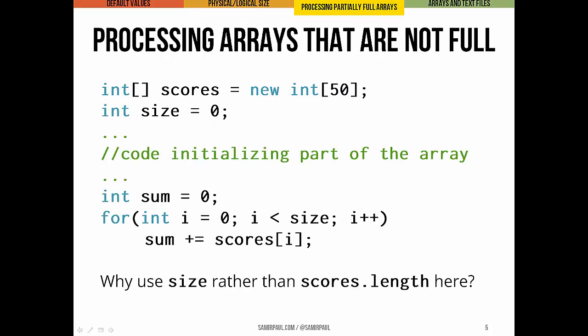Now, we saw in a prior lecture how we would generalize a loop so that we could process every element of data in an array of any size. Essentially we just access every index starting from zero and going to the length minus 1. But when the array's not full, instead of using the array's physical size, its length, we want to use its logical size.